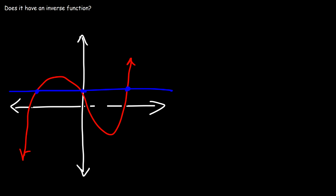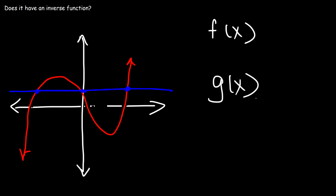So that's it for this video. Now you know how to determine if a function contains an inverse function, and if it's a one-to-one function. Keep in mind: if you have some function f of x, if it's a one-to-one function, that means that it passes the horizontal line test, and it does have an inverse function. If g of x doesn't pass the horizontal line test, it is not a one-to-one function, and it doesn't have an inverse function.